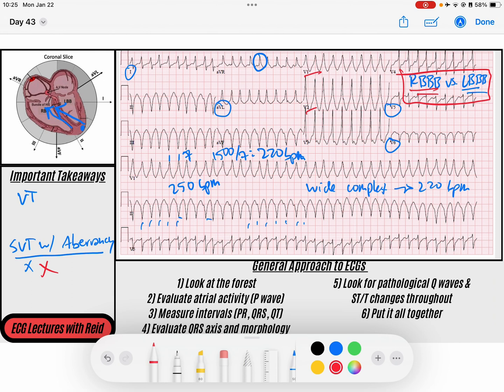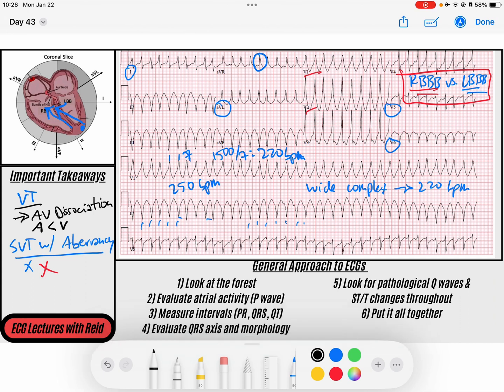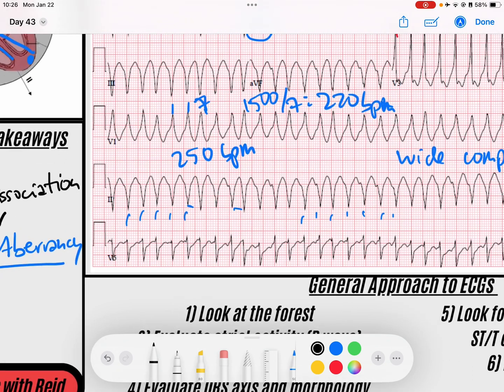The one thing that I want you to note on this EKG that's really going to help you determine that this is ventricular tachycardia is something called AV dissociation. And AV dissociation, what that means is that the atrial rate is less than the ventricular rate. So how can you figure that out? That means that we will not have a P wave for every QRS. We will have more QRSs per P waves.